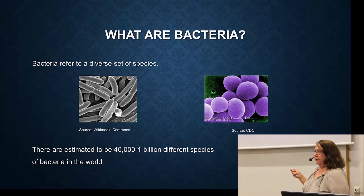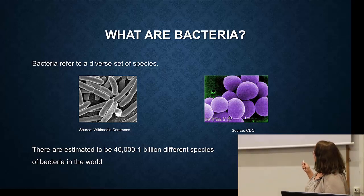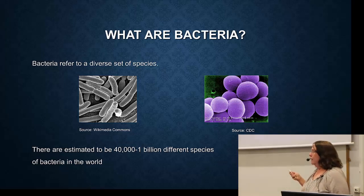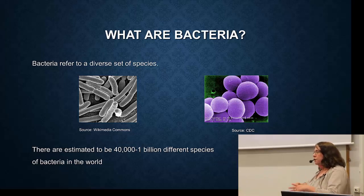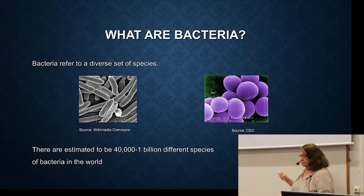Bacteria are extremely diverse. These are two examples: this shows E. coli, and this is Staphylococcus aureus. It's not really purple — it's been colored in this picture. There's estimated to be between 40,000 and 1 billion different species of bacteria in the world. It's a huge range, and there's huge uncertainty about this number, because there's probably on the order of thousands that have been studied, not billions.